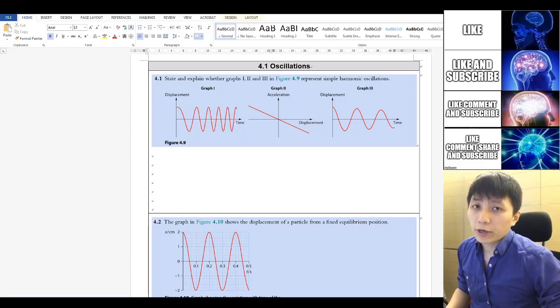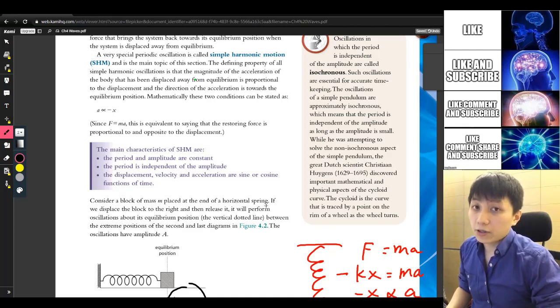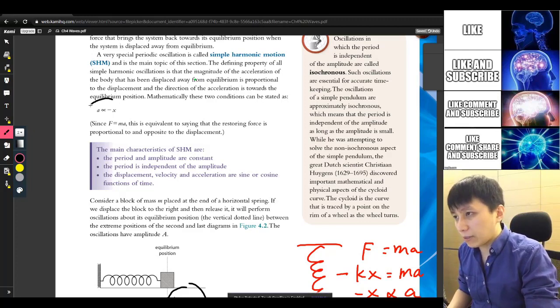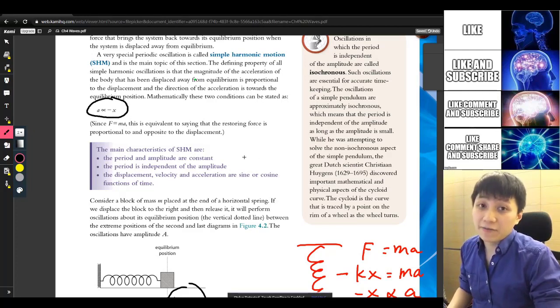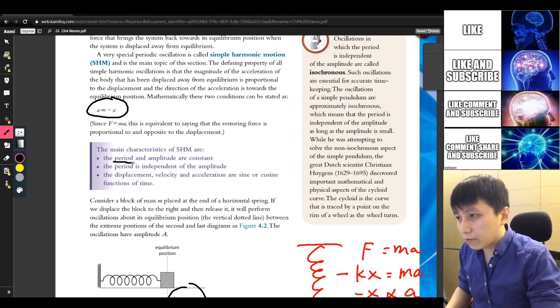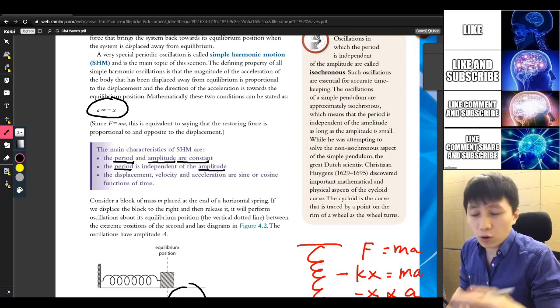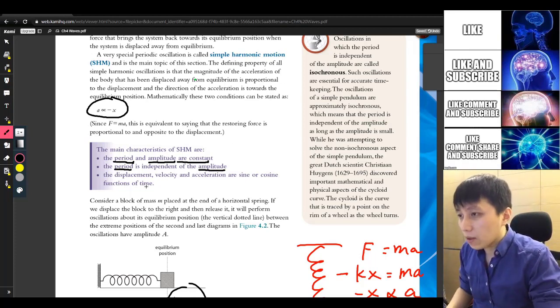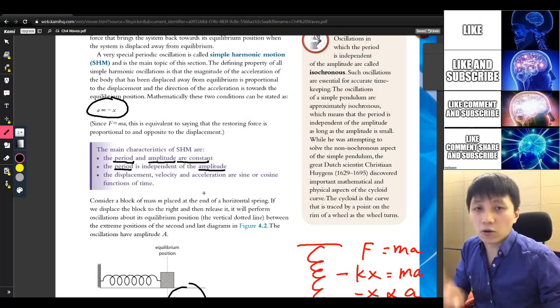Hi, let's try to do some practice on simple harmonic motion. Before that, let's quickly go through the definition of simple harmonic motion first. Mathematically, it is a proportional to negative x, where x is the displacement from equilibrium. At the same time, the period and amplitude are always constant. One thing we also know is the period is independent of amplitude, so whatever amplitude you have, the period is always the same. For displacement, velocity, and acceleration time graphs, they are in either sine or cosine, so periodic.